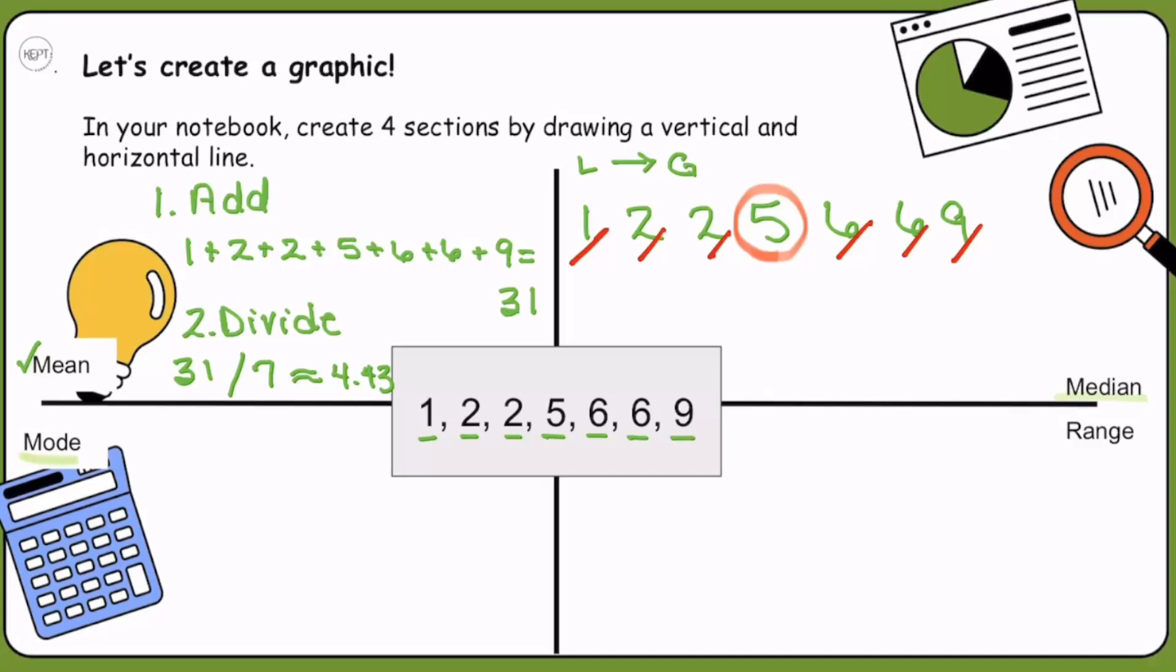The mode means the numbers that we have the most often. Let's write out our numbers and count to see how many of each number we have. One, we only have one 1. Twos, we have two 2s. How many 5s do we have? We have one 5. How many 6s do we have? Two 6s. And how many 9s do we have? One 9. We can see these two numbers appear twice. These are the numbers that we see the most in this data set. 2 and 6 are the mode for this problem.